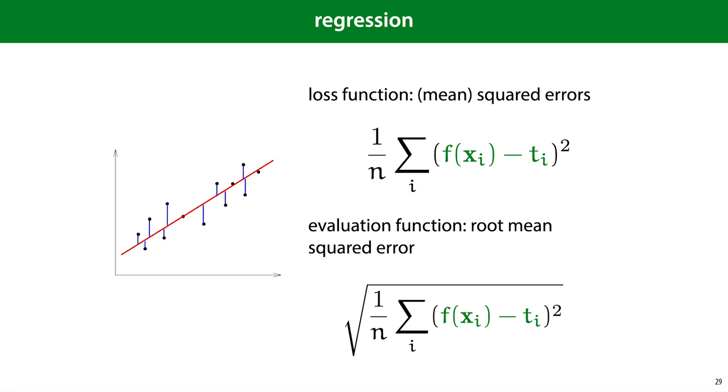This is difficult to use as a loss function because it makes the gradient more difficult to work out, but when it comes to interpreting the performance of a model, it can help to apply this square root. This is easiest to see if your target label comes with a unit.